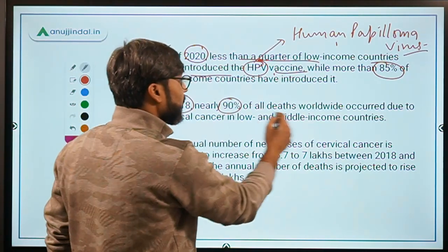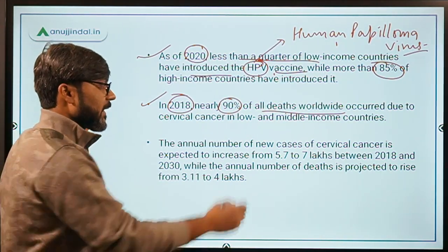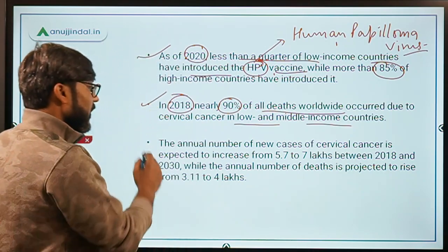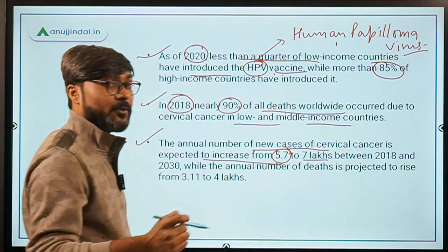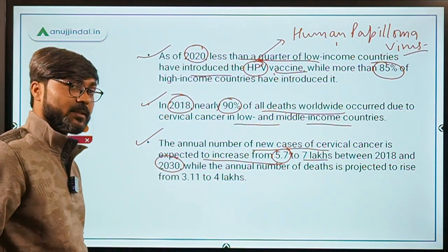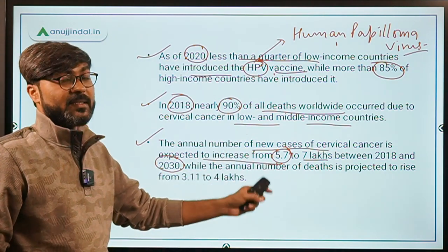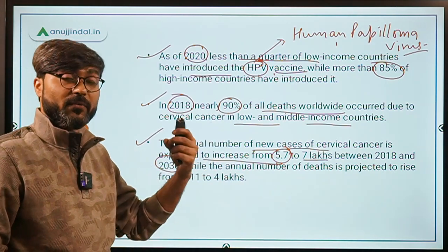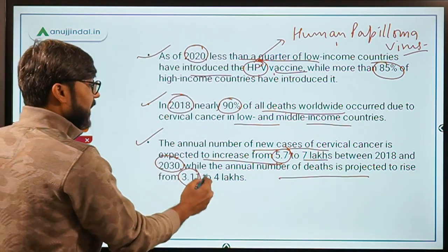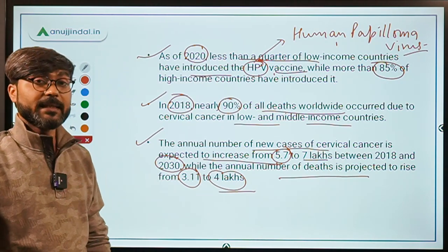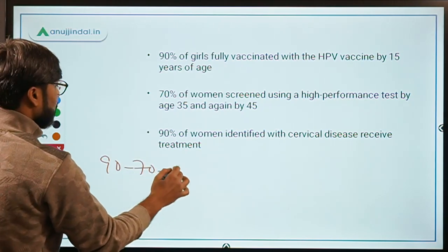In 2018, nearly 90% of all deaths due to cervical cancer occurred in low- and middle-income countries. The annual number of new cases of cervical cancer is expected to increase from 5.7 to 7 lakh between 2018 and 2030 — a huge increase. The annual number of deaths will also rise from 3.11 to 4 lakh from 2018 to 2030.